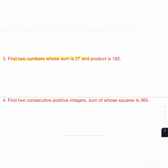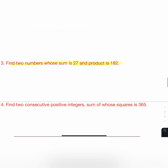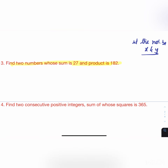Third main, question 1: find two numbers whose sum is 27 and product is 182. Let the numbers be x and y. So x + y = 27 and x·y = 182.